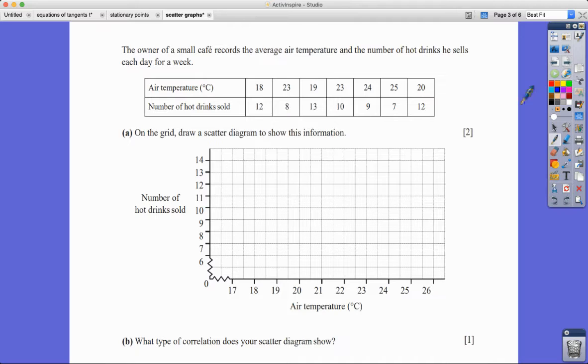So let's go and have a look at an example. It says here the owner of a small cafe records the average air temperature and the number of hot drinks he sells each day for a week. So you might think about what your hypothesis is here. What do you think would happen to the number of hot drinks sold as it gets warmer? Let's go and investigate by actually plotting the points. It says on the grid draw a scatter graph to show this information.